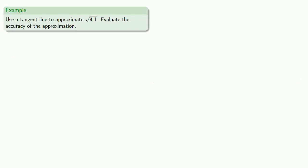So, for example, let's use the tangent line to approximate the square root of 4.1, and let's evaluate the accuracy of this approximation. To proceed, we'll need square root of 4.1 to be the value of some function, and we have our choice of functions.